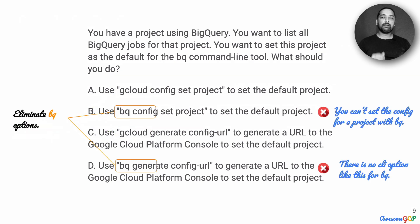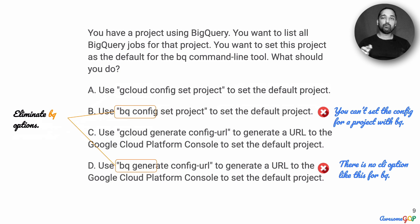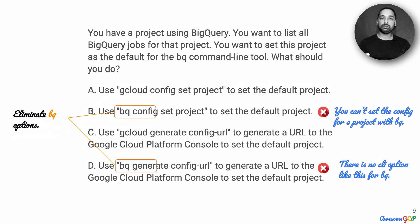Given this, we can therefore eliminate bq as an option for any of these choices. Option B, bq config set project — that's not where you do it. You can't set the configuration for a project with bq; you can only access and work with BigQuery data using bq. Remember that a project is not only about BigQuery — there could be many different things used by those projects. So we can also eliminate option D just because it starts with bq.